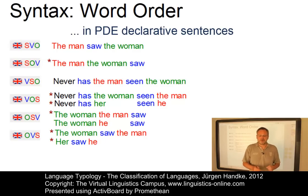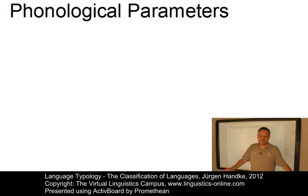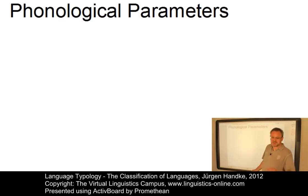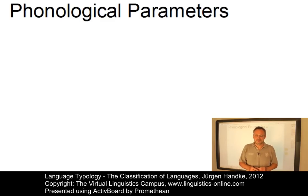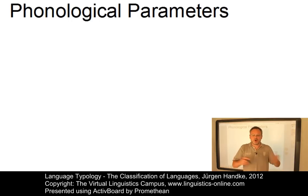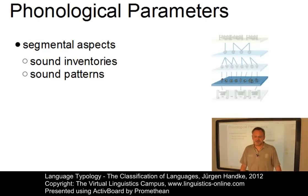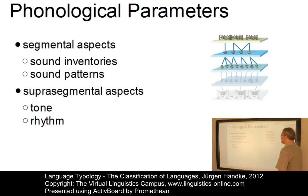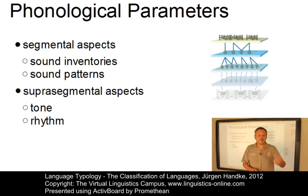Let's finally look at the phonological parameters of language classification. There are several possibilities: for example, one could use segmental aspects such as the presence or absence of certain segments — for instance, particular vowels, consonants, or the use of nasalization. However, such segmental parameters are less significant than suprasegmental aspects such as tonal phenomena or the rhythmic organization of a language. So let's look at them in more detail.